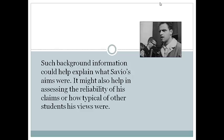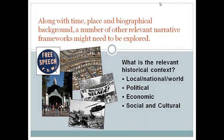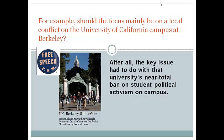Student groups seeking funds for civil rights causes were among those banned from setting up tables to publicize their efforts. Along with time and place and biographical background on Mario Savio, a number of other kinds of historical context could be explored. The four listed here are all relevant in seeking to understand the Free Speech Movement and Mario Savio's role in it. For example, should the focus mainly be on a local conflict on the campus at Berkeley? Conditions were especially ripe for a bitter confrontation on that campus, so one context could be the local one — the situation at Berkeley itself.